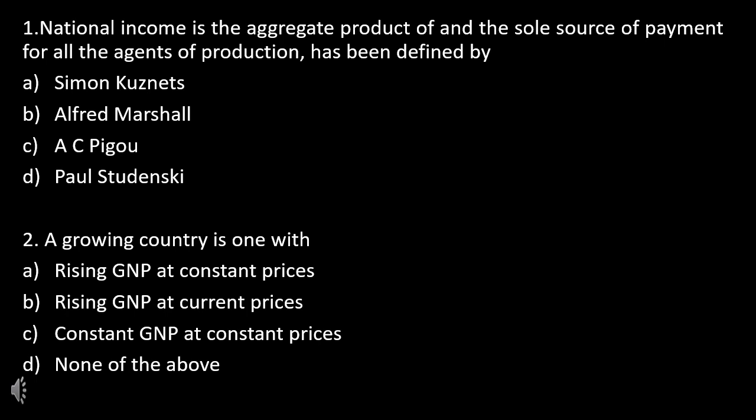Question No. 2: A growing country is one with — rising GNP at constant prices, rising GNP at current prices, constant GNP at constant prices, or none of the above?